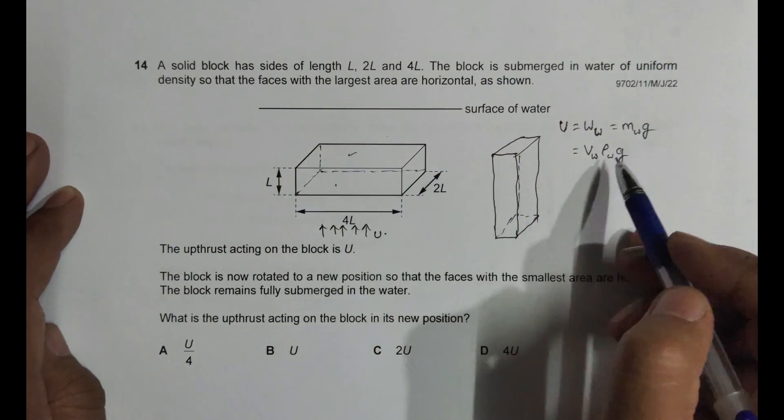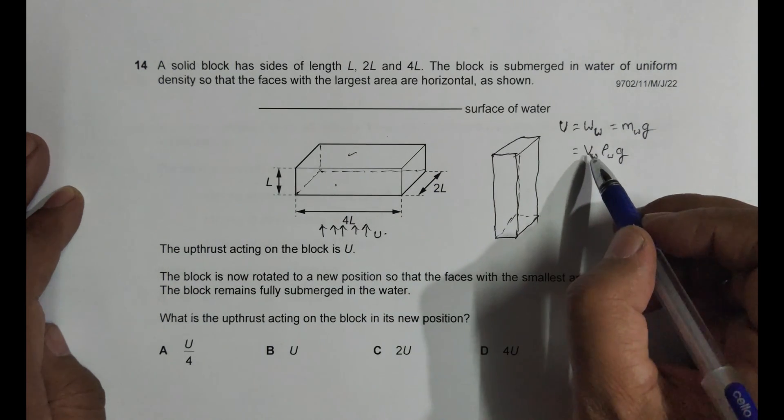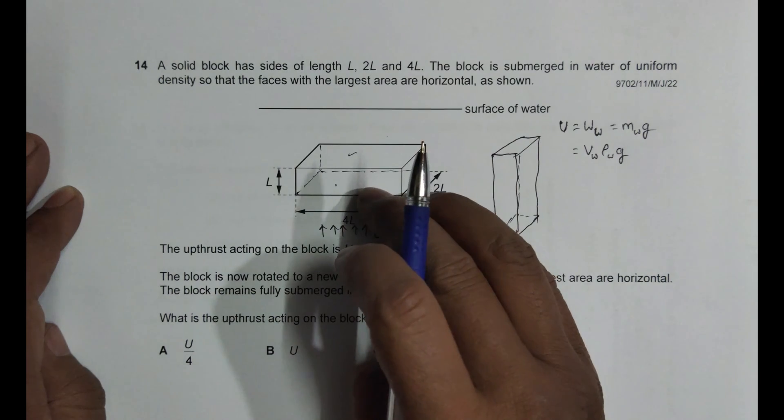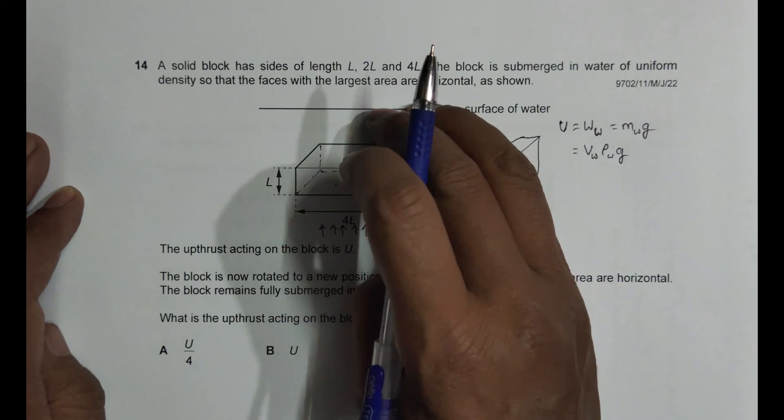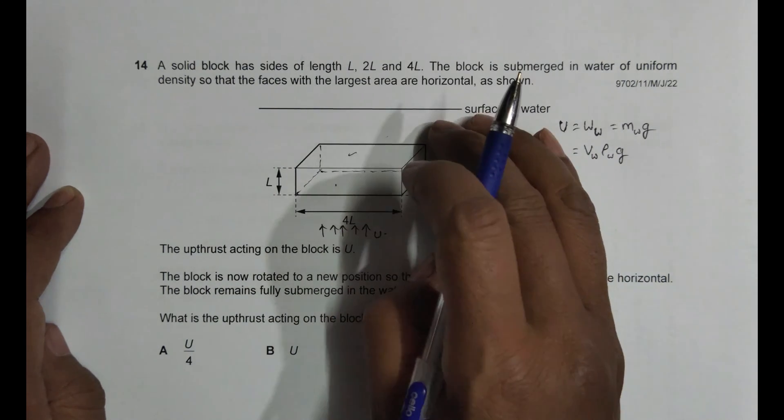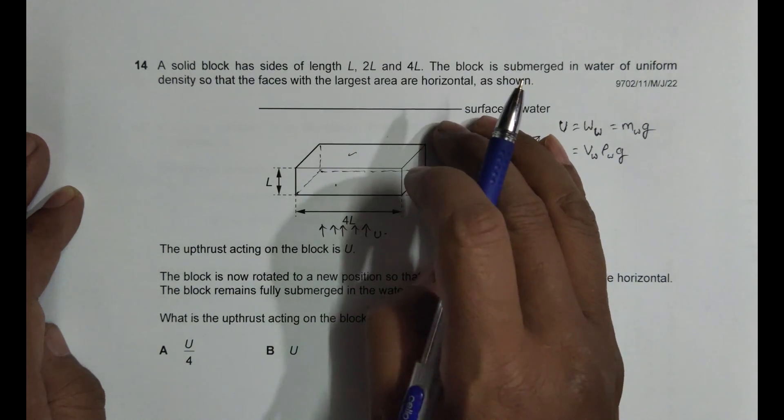Now density is uniform everywhere, g is uniform everywhere, and the volume of water displaced when it is immersed displaces a certain volume of water. Now it remains submerged, which means that the volume of water displaced should still be the same.